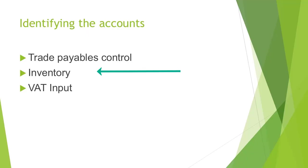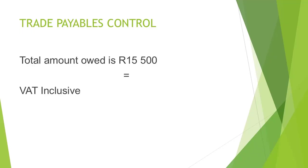The inventory account is used when a business uses the perpetual inventory system, since the business records all inventory movements directly in the inventory account. The third affected account is VAT Input, since the business recorded the VAT on the original purchase transaction in the VAT Input account, and because of the return of the inventory, the business will no longer be able to claim the VAT on the original purchase transaction back from the South African Revenue Services.